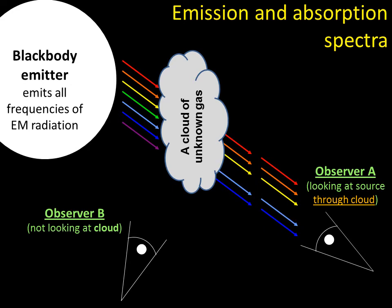Well, the blackbody emitter throws out all its radiation at all frequencies, but now that cloud of unknown gas is stealing the green and the purple. So it's stealing some of the photons, because the electrons are getting excited by those particular frequencies, those particular colours of light.